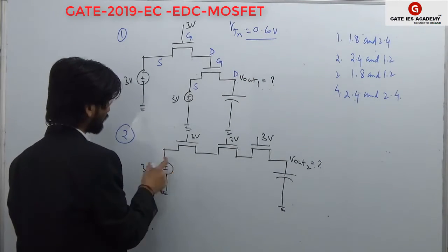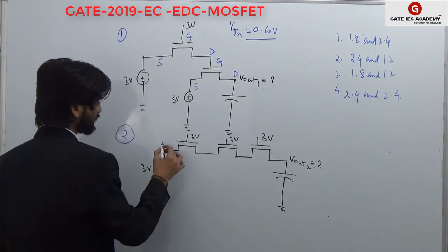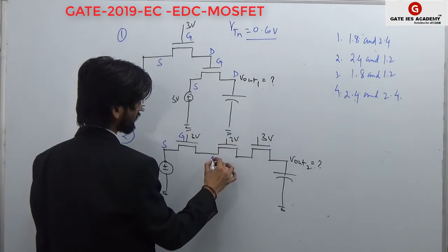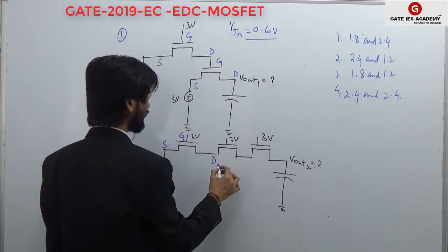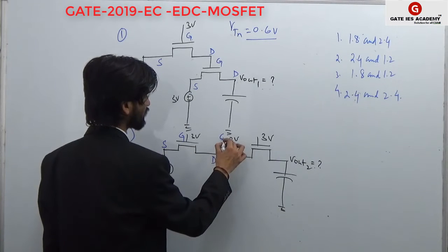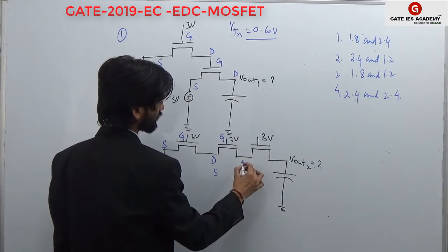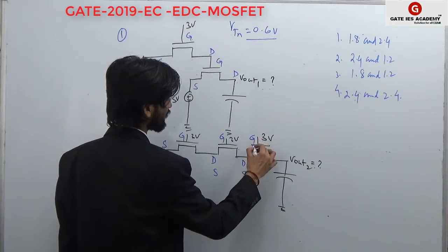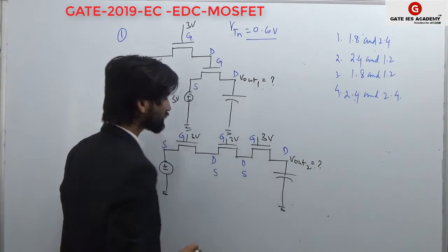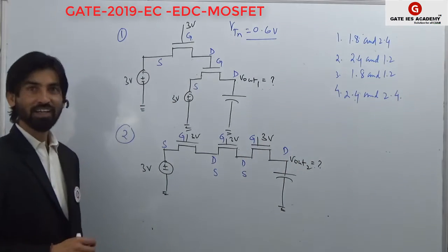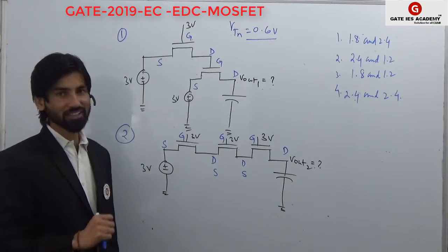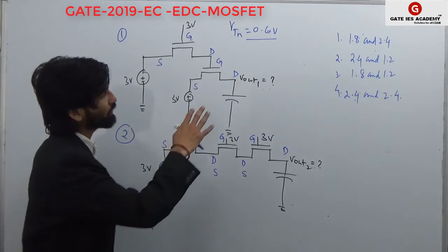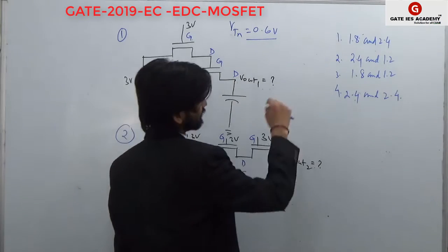In the same manner, we can identify the terminals here: this is source, this is gate, this is drain. And again, this is source, this is gate. This is drain. Again, this is source, this is gate, and this is drain. If you are able to identify the terminals, you would be able to solve this and get the right answer.